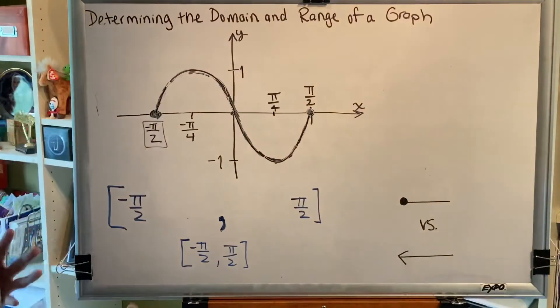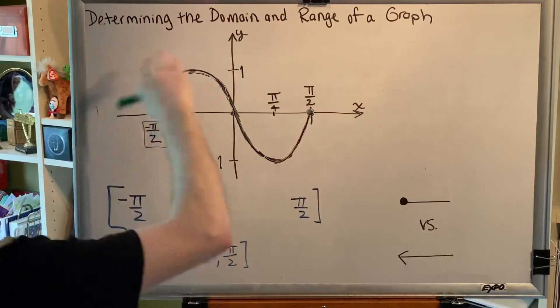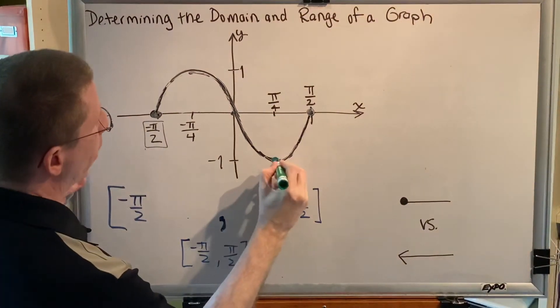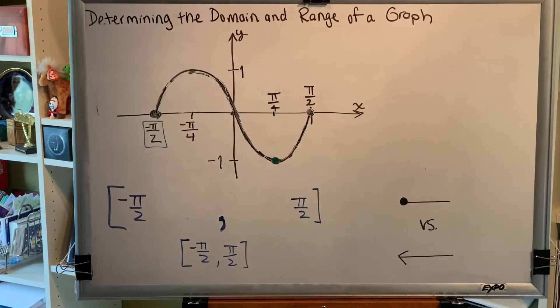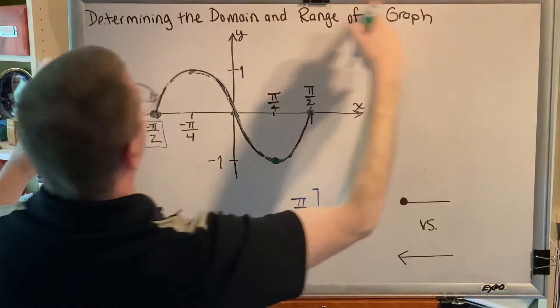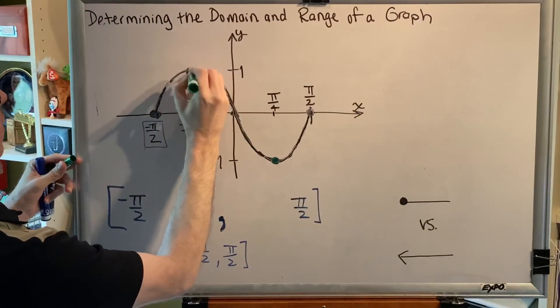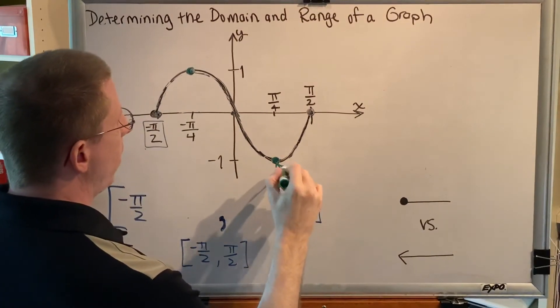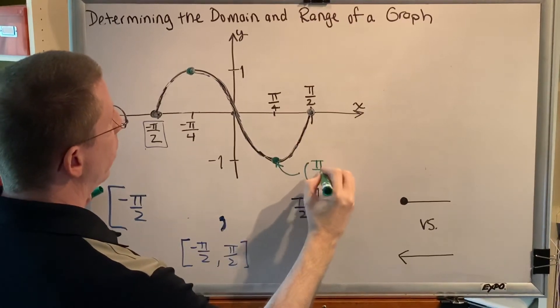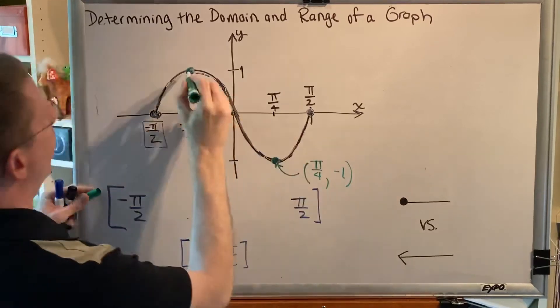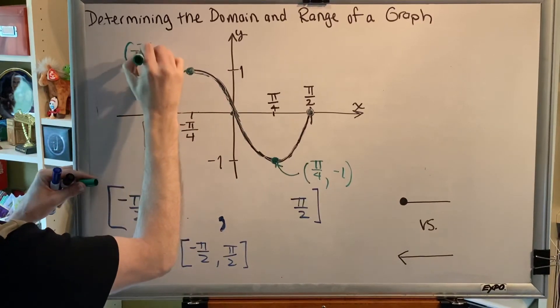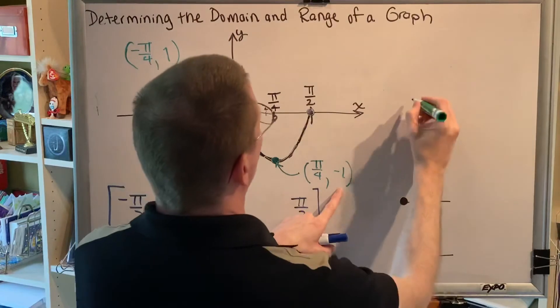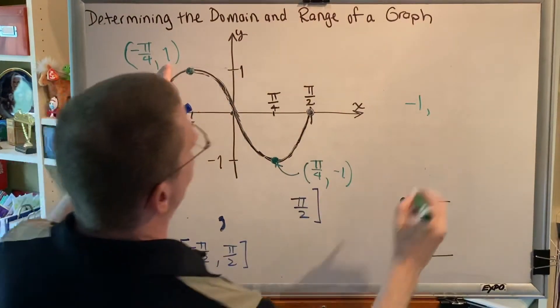So which point on this graph is farthest down? Which part of this black curve is closest to the bottom of the frame? That would be this point right here. Which point on the black curve is furthest up? In other words, closest to the top of the frame. That would be this point right here. Now let's see if we can identify the y-coordinates of those two points. This right here is the point pi over 4 comma negative 1. This right here is the point negative pi over 4 comma positive 1. So the smallest y value is negative 1 and the largest y value is positive 1.